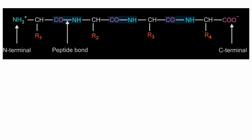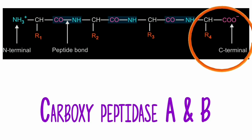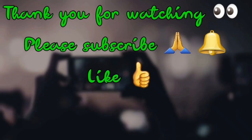Coming to identification of C terminal amino acids — C terminal amino acids may be identified by using carboxypeptidase A and B. These enzymes specifically hydrolyze and release the C terminal amino acid from the polypeptide chain.